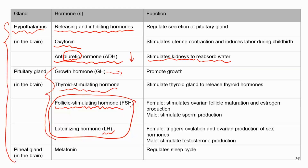FSH stimulates the production of gametes. In females, it promotes ovarian follicles to mature so they can release the oocyte inside. In males, FSH stimulates sperm production. Luteinizing hormone stimulates the production of sex hormones — in females, mainly estrogen but also progesterone; in males, testosterone.